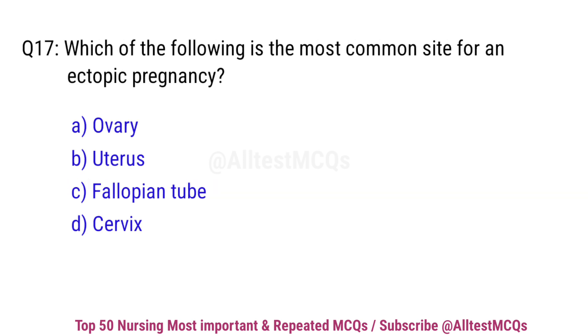Question No. 16 (revised). Which of the following is the most common site for an ectopic pregnancy? Right option is C.